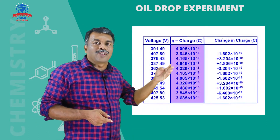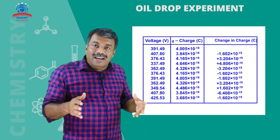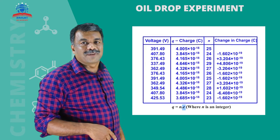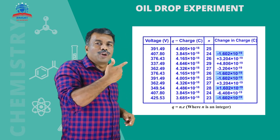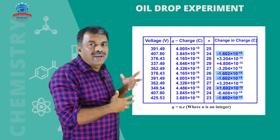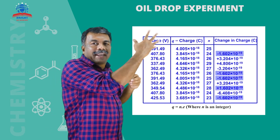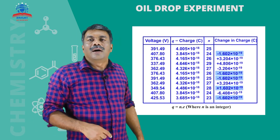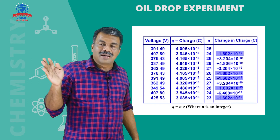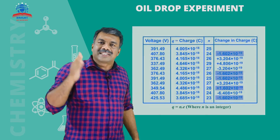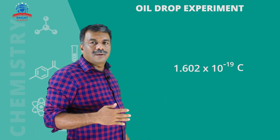The charge acquired by the oil droplet may be positive or negative, corresponding to positive ions or free electrons. Free electrons absorb the negative charge. He concluded that the charge of an electron — the quantity of charge contained on an electron — is equal to 1.602 × 10⁻¹⁹ coulombs. This is the oil drop experiment.